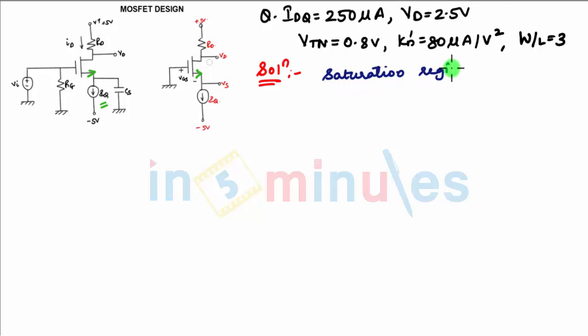If the transistor is in saturation region, ID equals kn' over 2 times W/L times (VGS minus VTN) squared. When you substitute the values - ID is given as 250 microamperes, kn' is given, W/L is given - then you can find VGS. VTN is given as 0.8V, so from this you can find VGS as 2.24 volts.